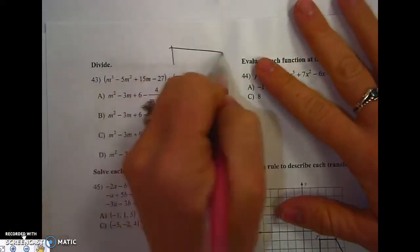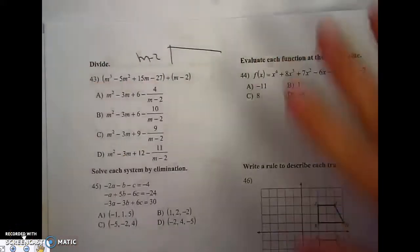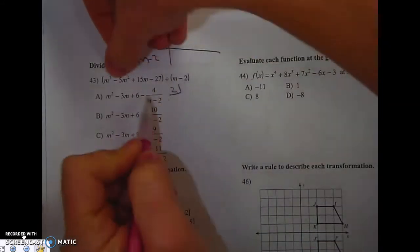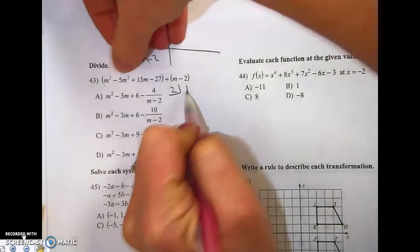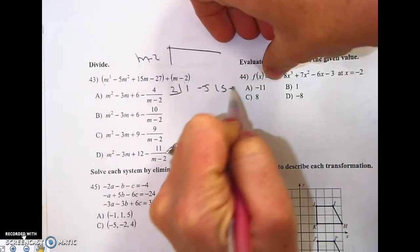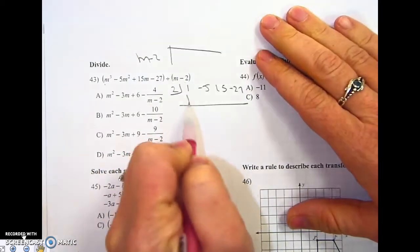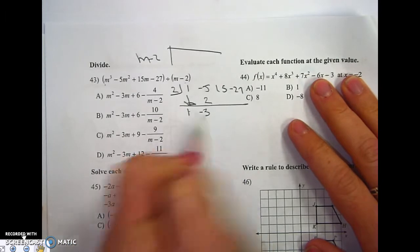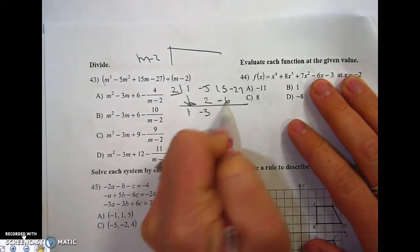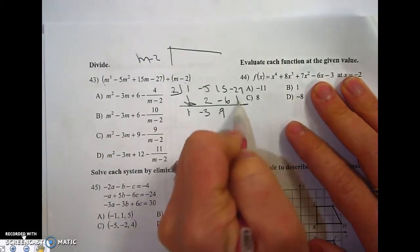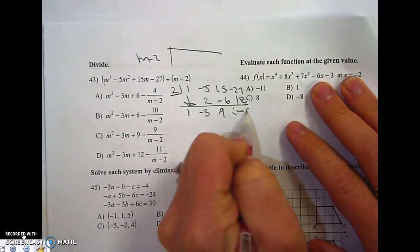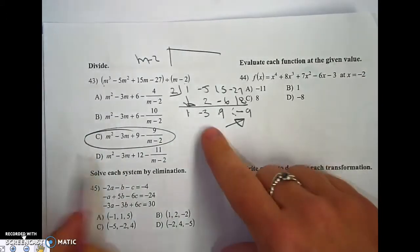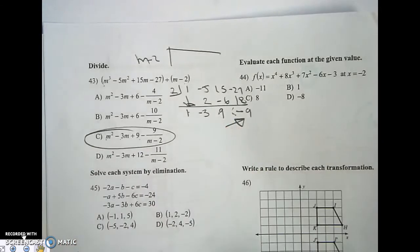For number 43, you can either do long division, which I don't recommend, or synthetic. Take the opposite of negative 2, and you do the coefficients 1, negative 5, 15, negative 27. Bring down the first number. This times this, plus this. This times this, plus this. This times this, plus this. The negative 9 represents the remainder, which only leads me to C, but let me make sure. 1, negative 3, 9. I'm good.